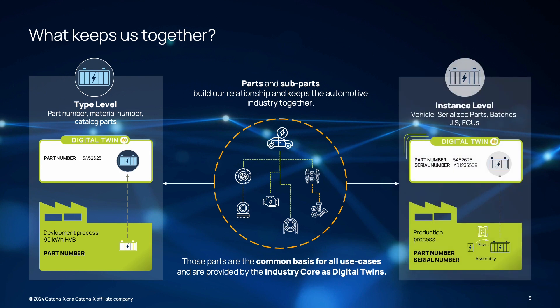The second level is the instance level. Each type will at some point be produced many times in our plants and factories. Each produced part or instance gets an identifier at the end of production. This can be a unique identifier like a serial number, or for materials it can also be a batch number. The Industry Core supports both levels and describes how a digital representation of those parts, components, materials and vehicles can be created.